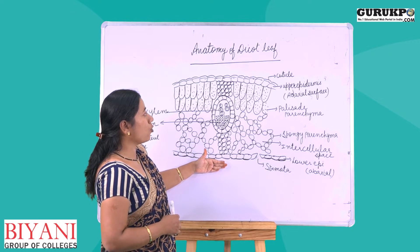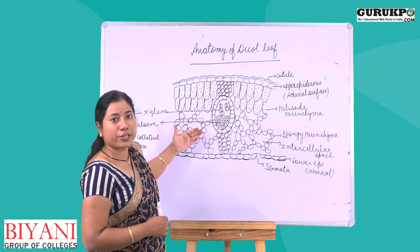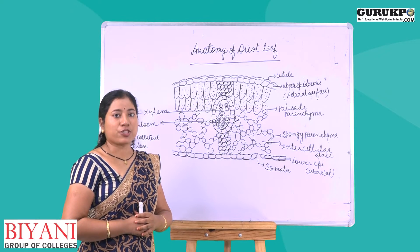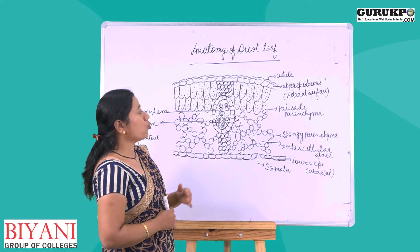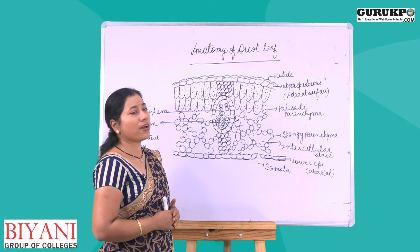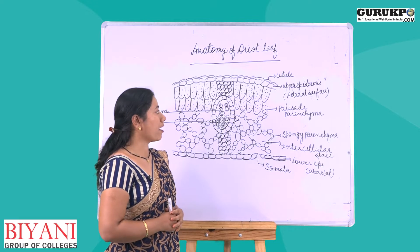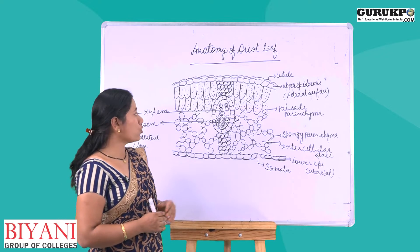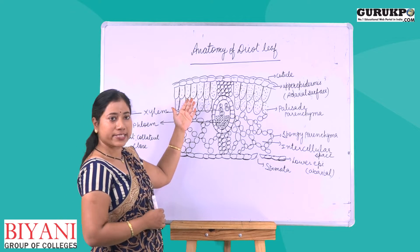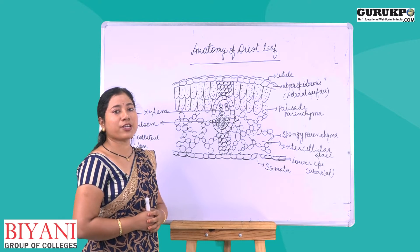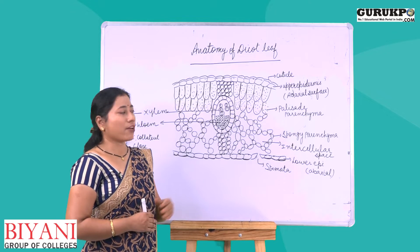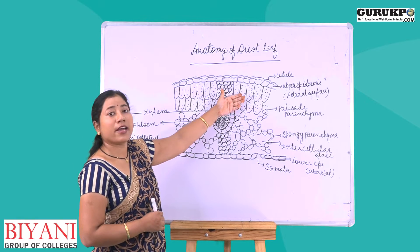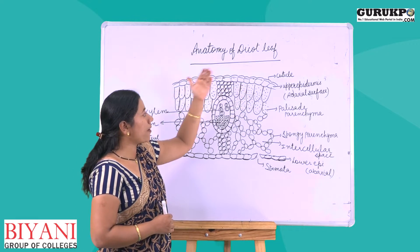Next, between the upper and lower epidermis, mesophyll tissue is present. This mesophyll tissue is divided into two types of cells: first is palisade parenchyma and second is spongy parenchyma. Palisade parenchyma tissues are made up of elongated cells, tightly arranged, and have a large number of chloroplasts. Their function is to carry out photosynthesis. Palisade parenchyma lies just beneath the upper epidermis.